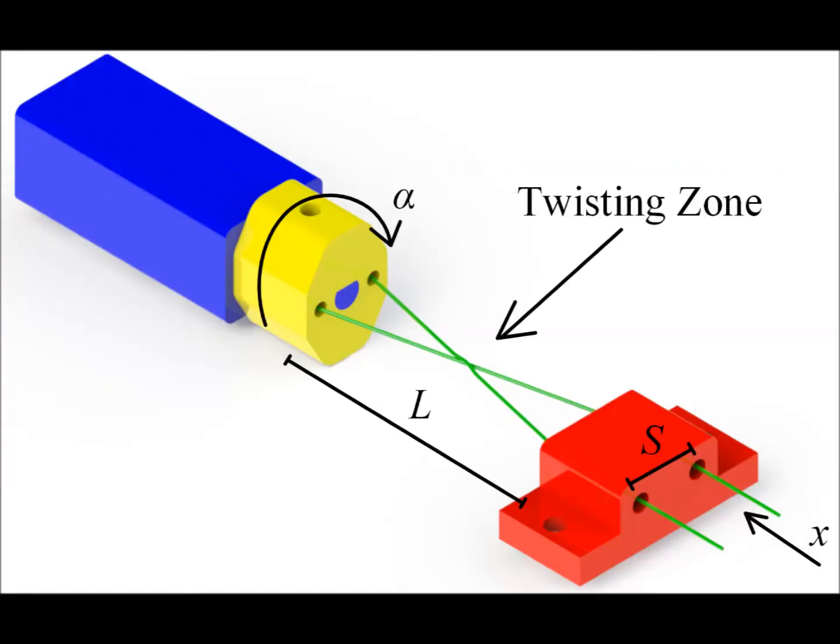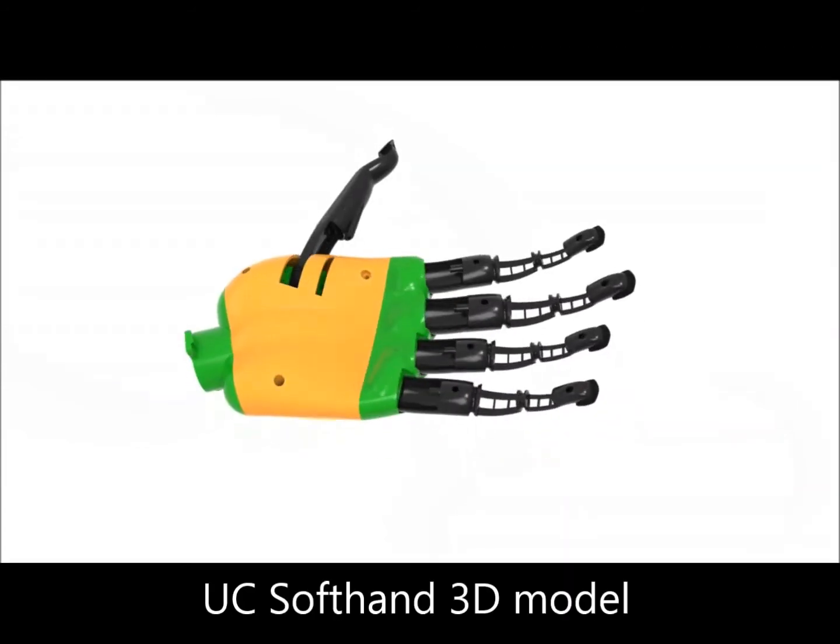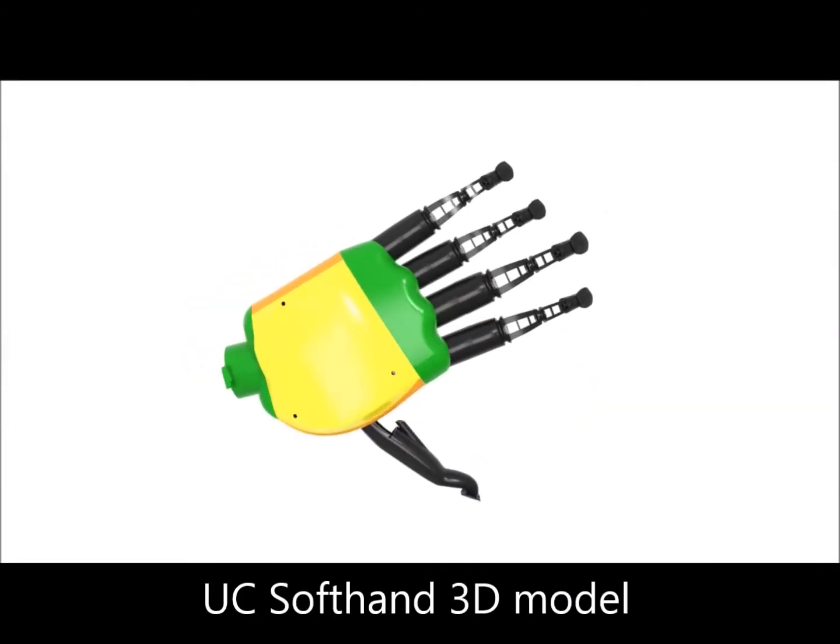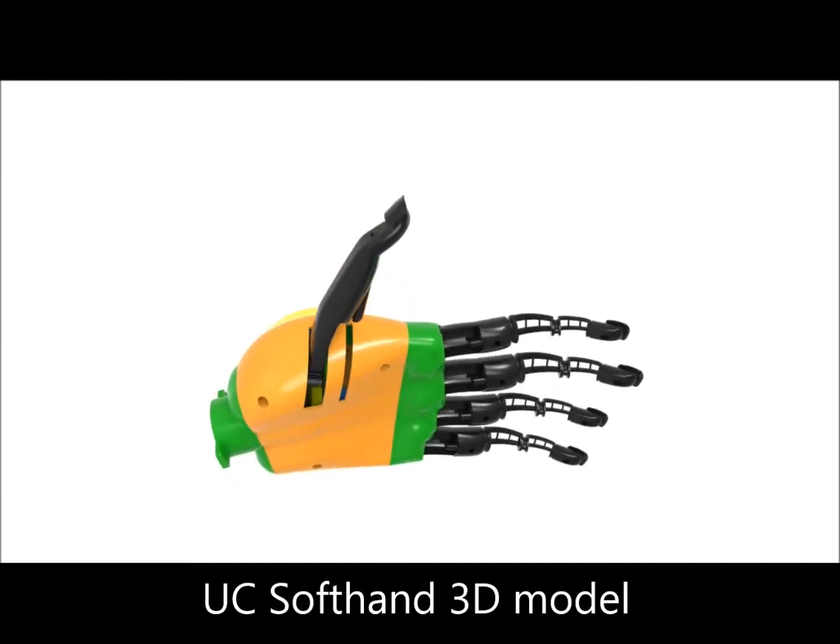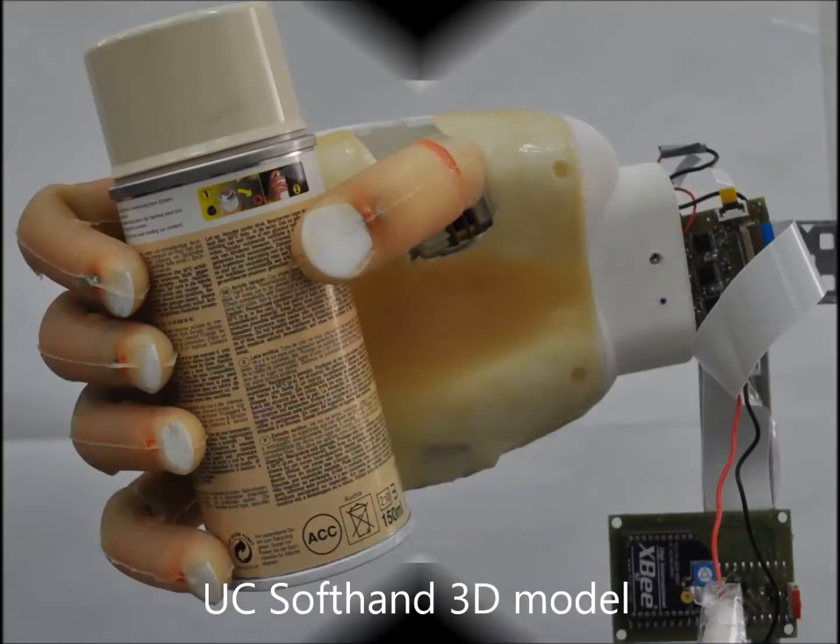However, the contraction ratio of the twisted string system is low, typically around 20%. The good news is that by taking an innovative approach and by going to an over-twisting phase, we managed to reach a contraction ratio of 80%.